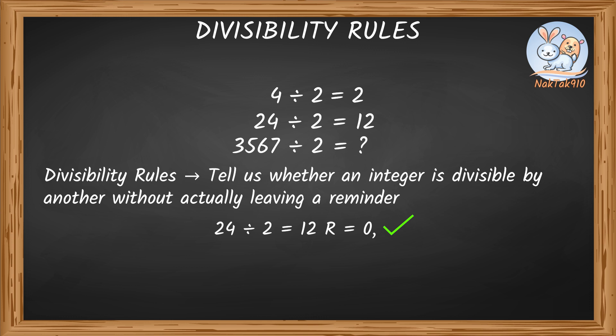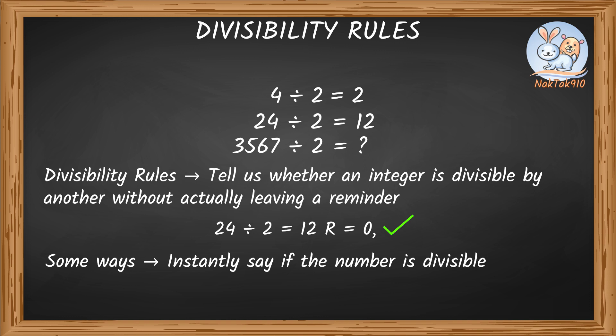In this session, we will learn some ways to instantly say if a number is divisible by 2, 3, 4, 5, 6, 7, 8, 9, 10, or 11. Each one has their own rule — they're called divisibility rules. But what about 1? Any number divided by 1 is always the same number, so any number is always divisible by 1.